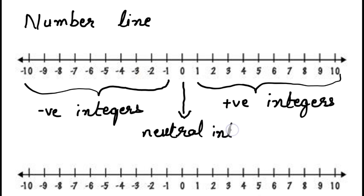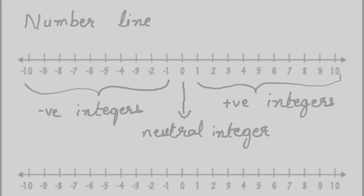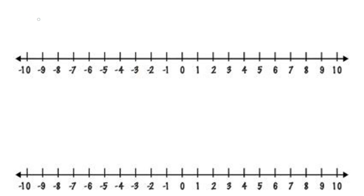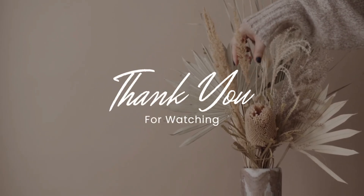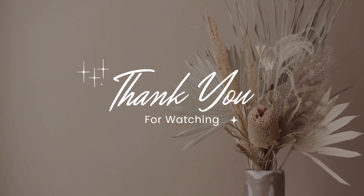So this is how we represent integers in a number line. Now let us mark some of the integers in this number line. First, let us mark plus 5 in the given number line — circle plus 5, then draw a line from 0 to plus 5. Similarly, let us mark minus 7 in the given number line — circle minus 7 and draw a line from 0 to minus 7. So this is how we mark integers in the given number line. I hope you all have understood what are integers and how to mark integers in the number line. Thank you for watching.